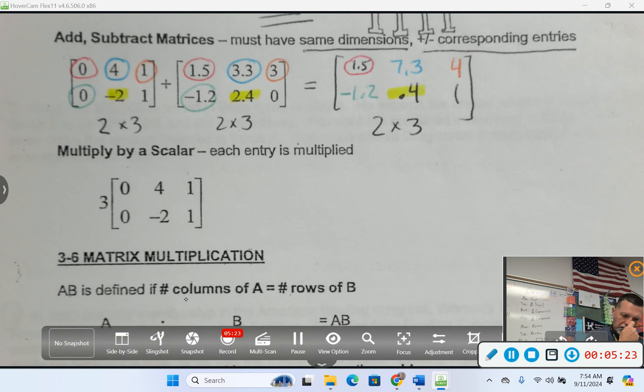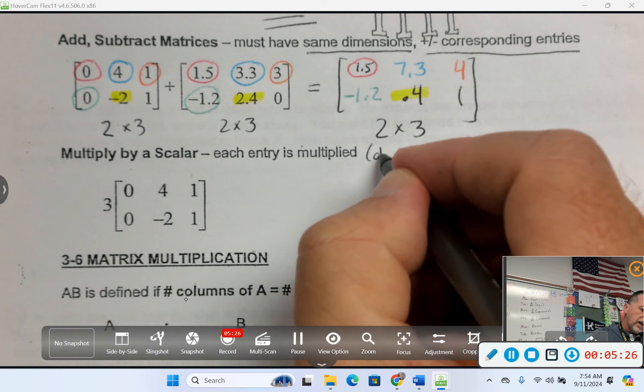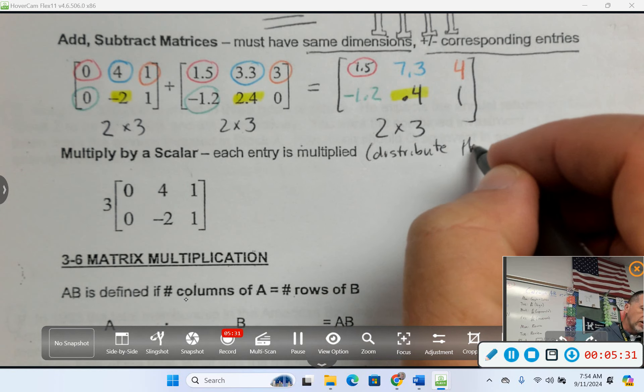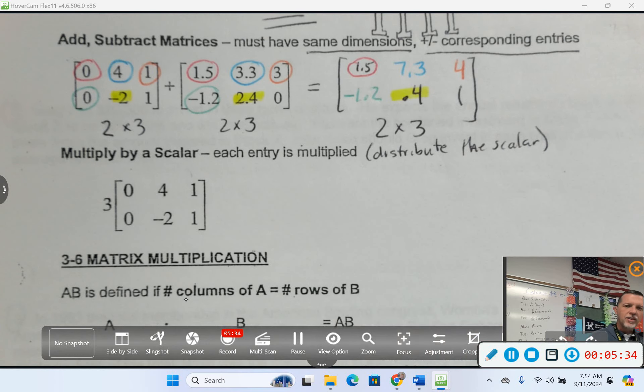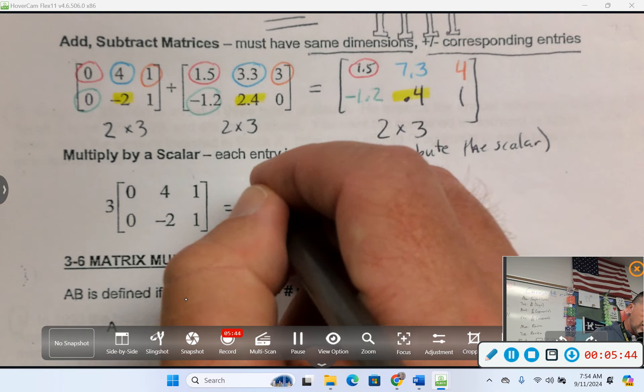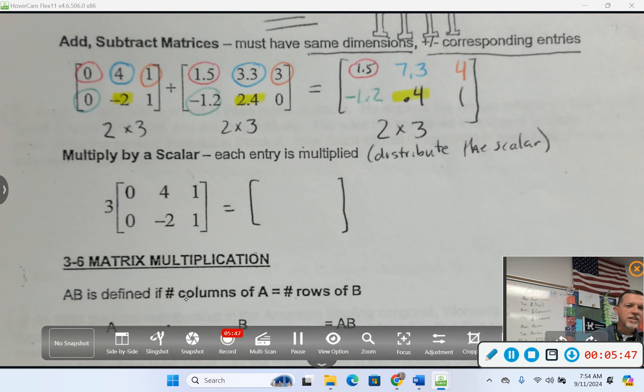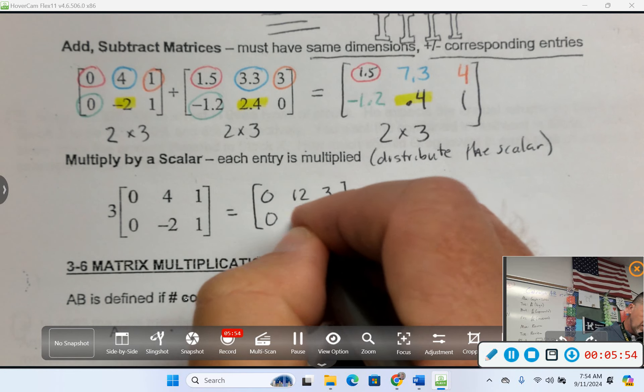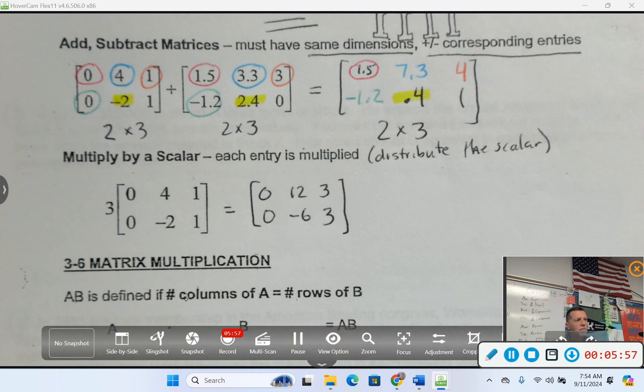Multiply by a scalar - each entry is multiplied. You can just think of this as distribute the scalar. This is pretty easy too because it works probably like you think it would work. If there's a 3 out front, everybody gets the 3. 3 times 0, 3 times 4, 3 times 1. Pretty simple on multiplying by a scalar.